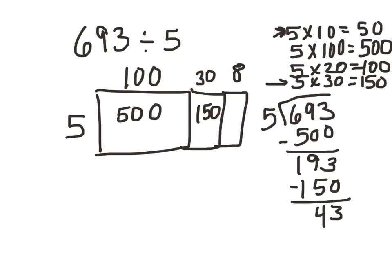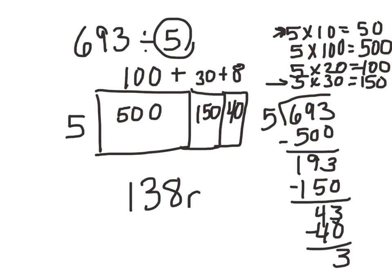I'm going to multiply 8 times 5 and it's going to be 40. I'm going to take my 40 and I have 3 left. I'm dividing by 5 and I only have 3 left so I can't go any further. So my answer is at the top 100 plus 30 plus 8. So that's 138 remainder 3 because I have 3 left over.